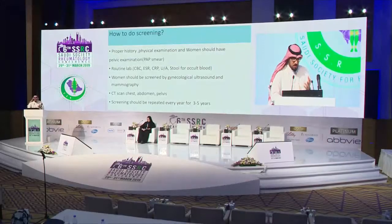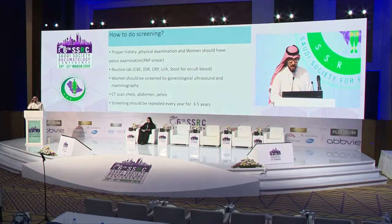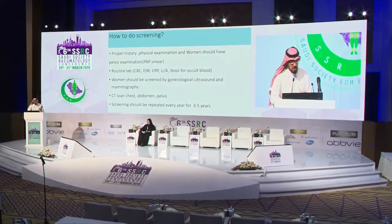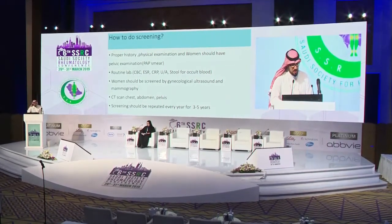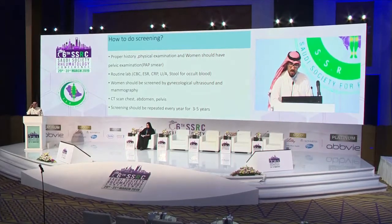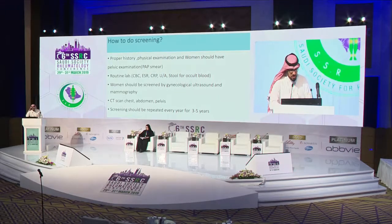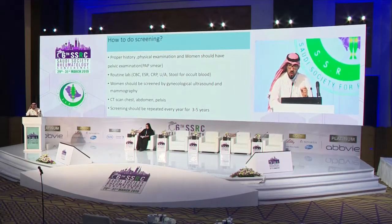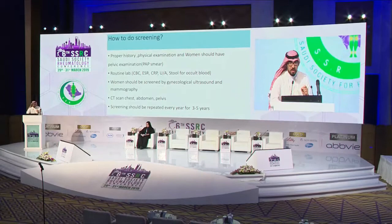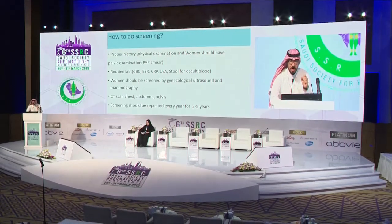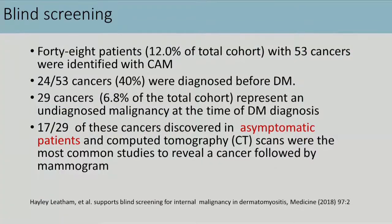Regarding how to perform screening: take a proper history and physical examination; every woman should have a pelvic examination with Pap smear. Routine workup should include CBC, ESR, CRP, urinalysis, and peripheral occult blood. Women should be screened with gynecological ultrasound to detect small ovarian cancers not detected by pelvic CT, as well as mammogram. CT scan of the chest, abdomen, and pelvis should be performed. Screening should be repeated every year for three to five years.